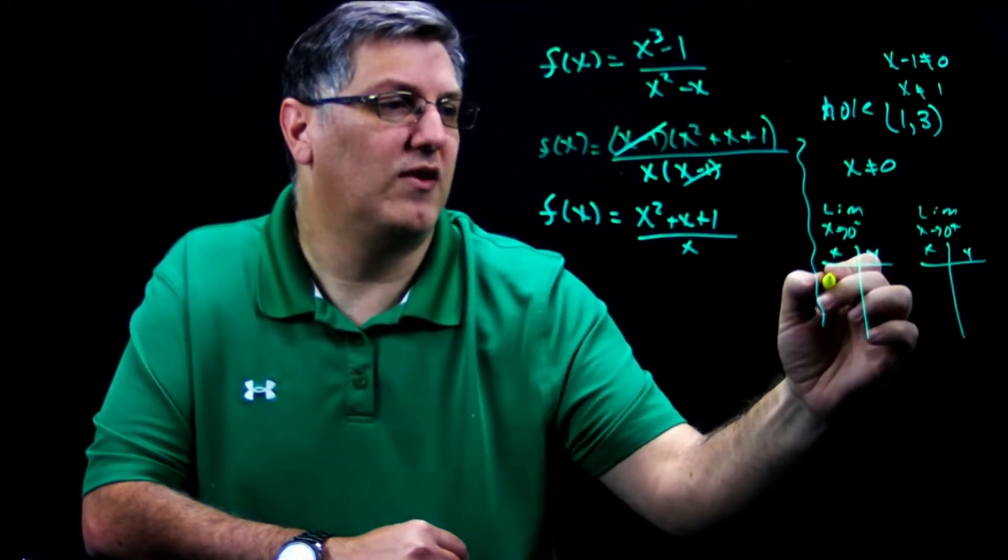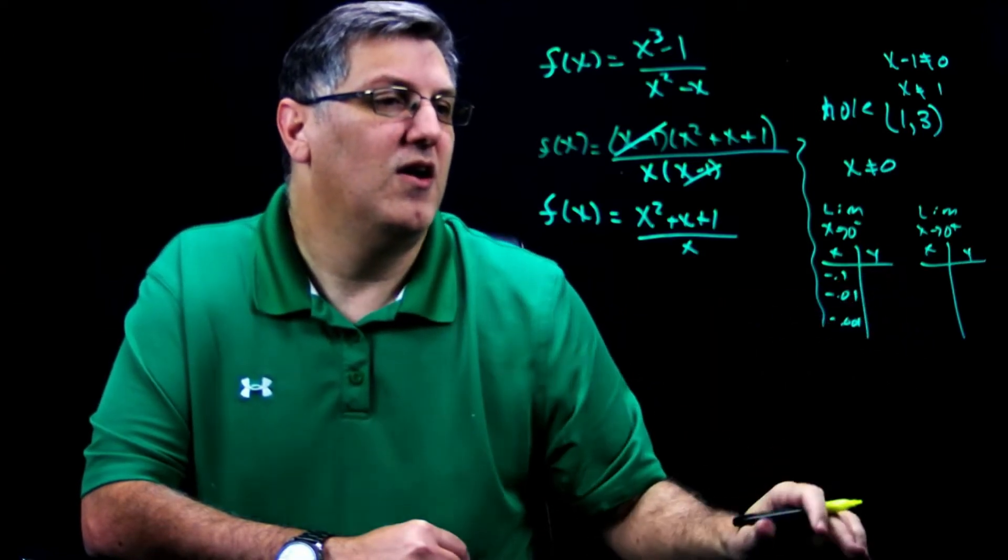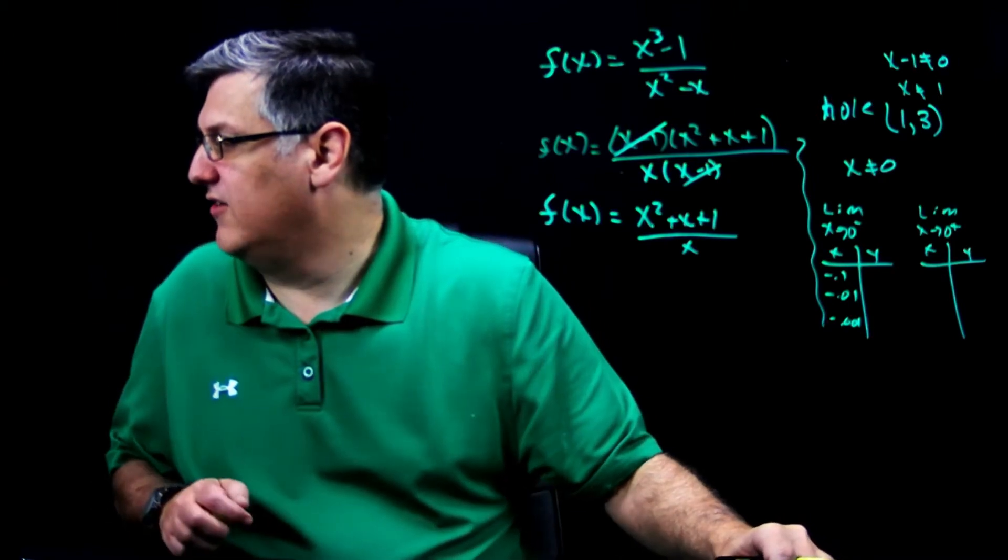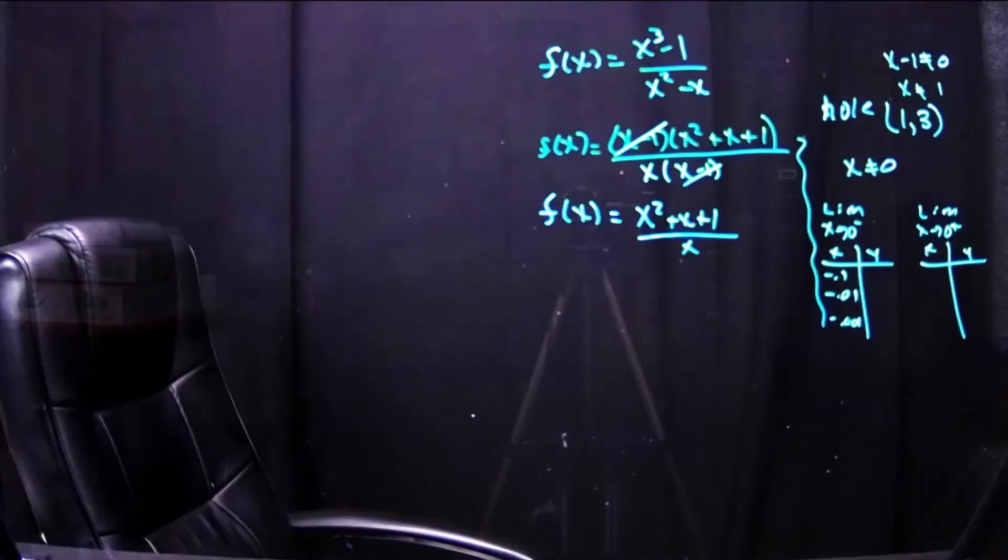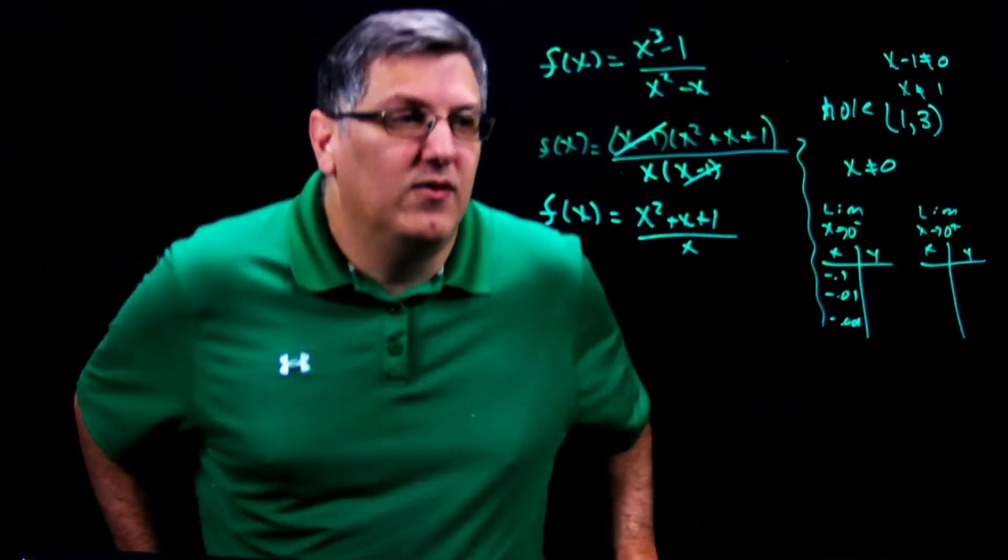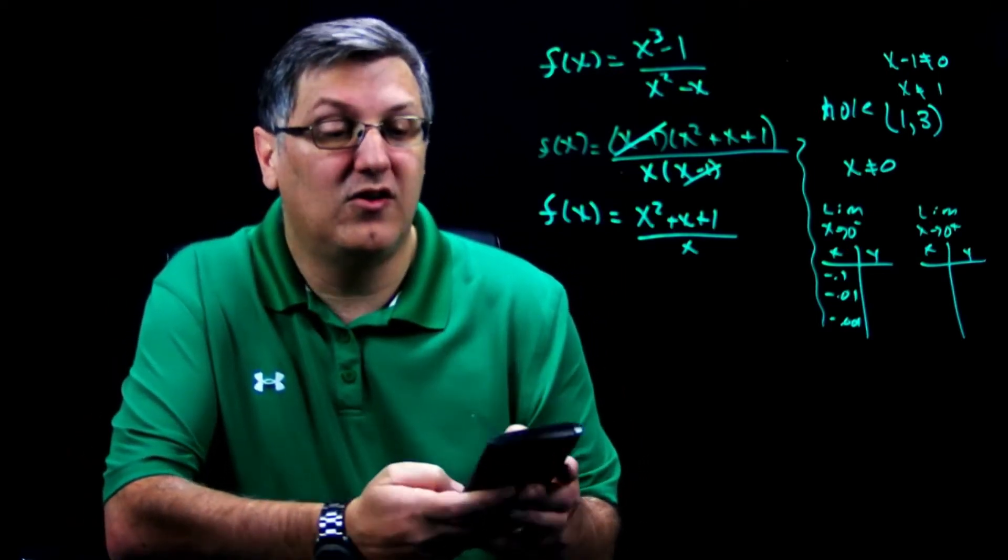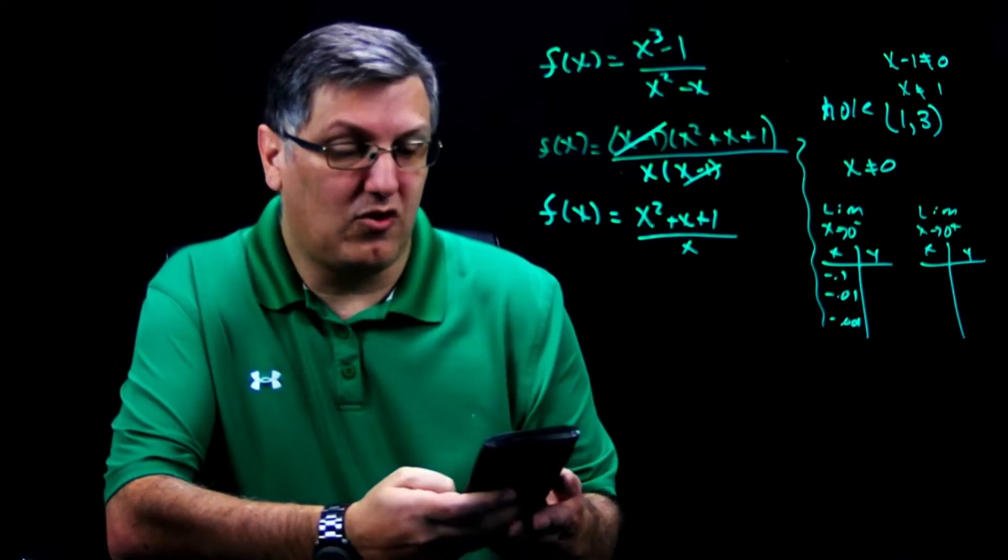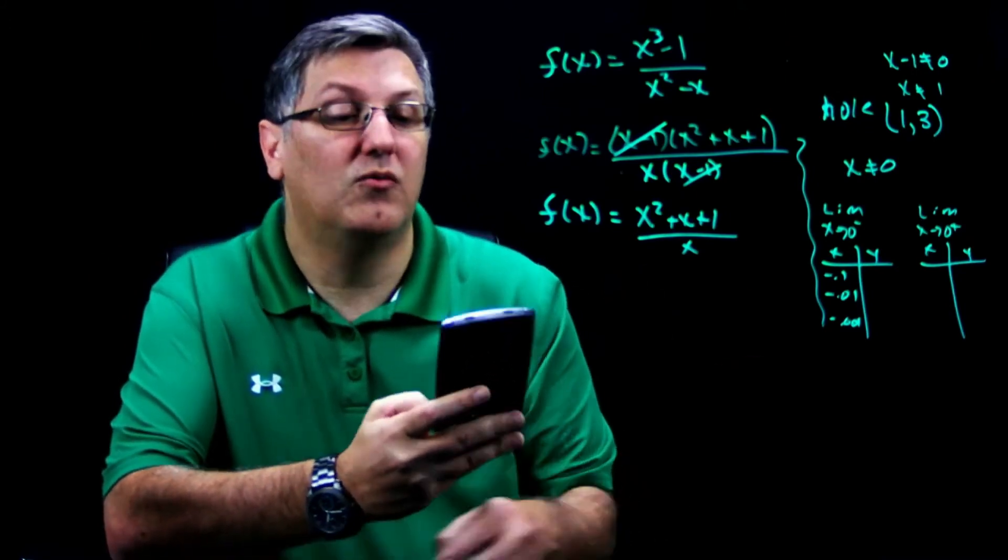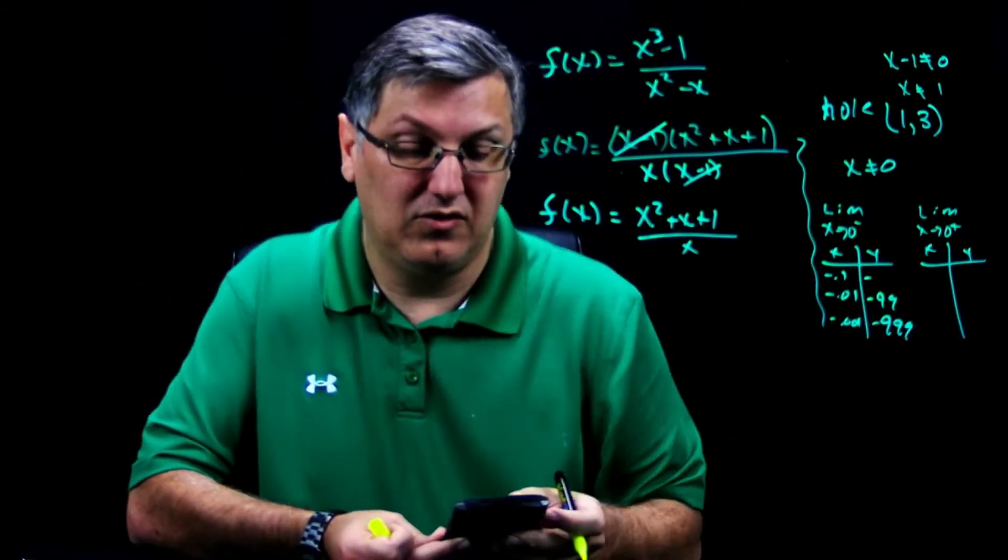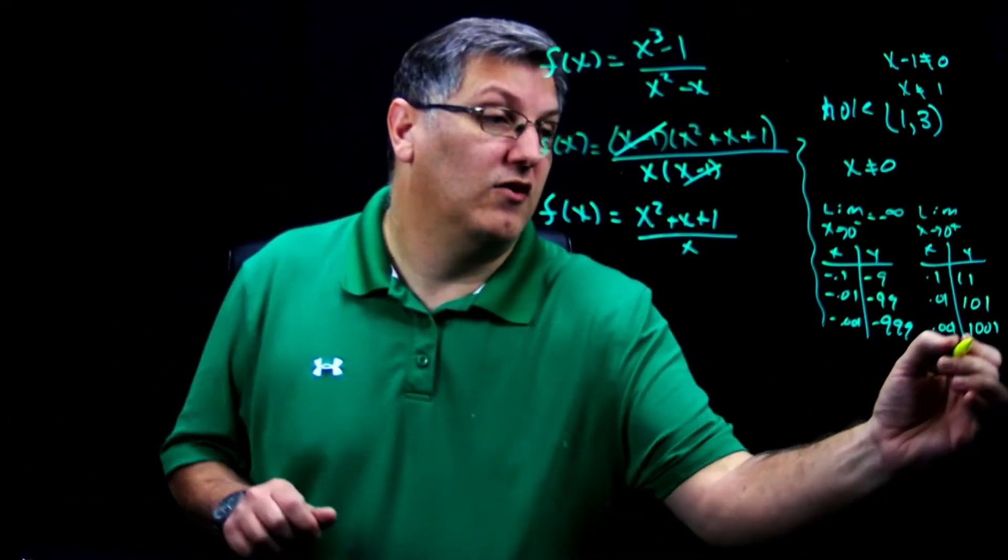So coming from the left, I'm going to do negative point one and negative zero one and a negative zero zero zero zero one. All right, I forgot to calculate these. Let me go grab my calculator and do this real quick. This is a last minute decision on the video. Let's start with negative zero one. These are all rounded numbers.